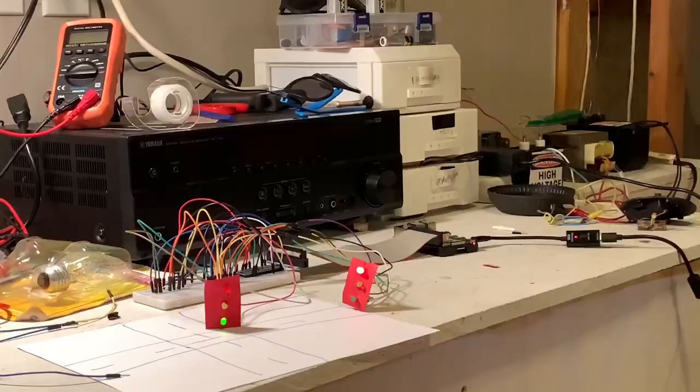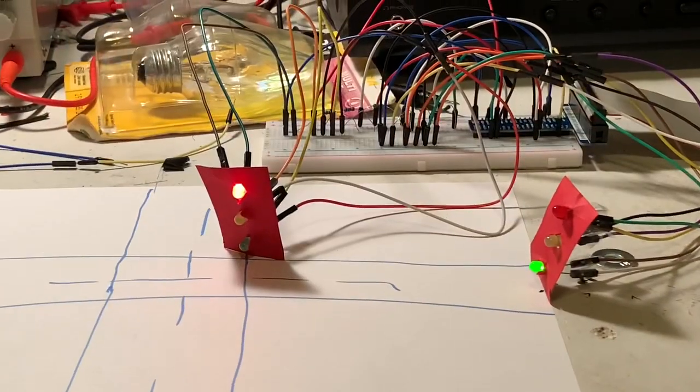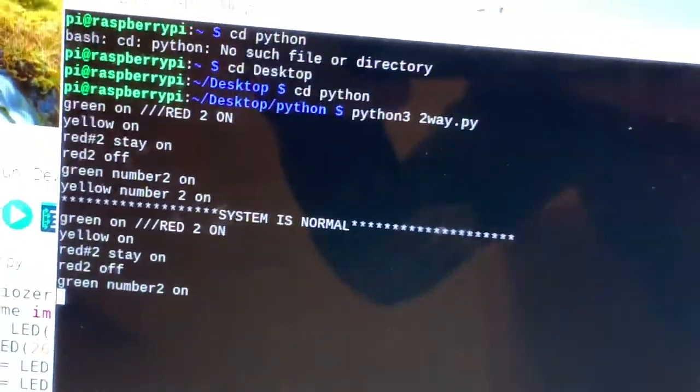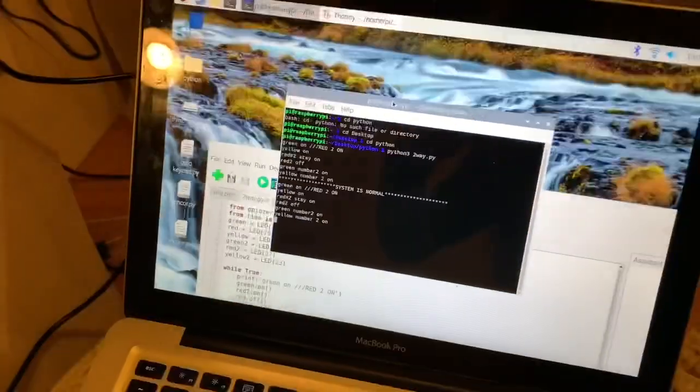Now let me show you what it looks like on the computer as the traffic light system is running. Here we go. We got the traffic light system running right here, and then on the computer on the command line you could see - let me zoom the camera out a little bit. There we go. I was wondering what was going on there.